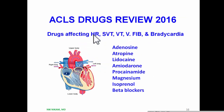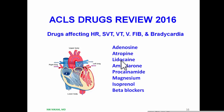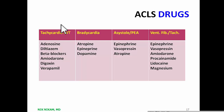Now let us look at drugs which affect heart rate and rhythm, addressing conditions such as supraventricular tachycardia, ventricular tachycardia, ventricular fibrillation, severe bradycardia, or asystole. The drugs in this category are adenosine, atropine, lidocaine, amiodarone, procainamide, magnesium, isoproterenol, and beta blockers. All of these drugs are used to restore normal sinus rhythm if possible, or at least control the ventricular rate and maintain adequate heart rate to improve cardiac output.